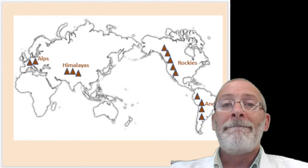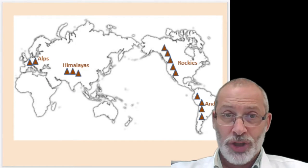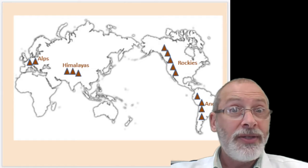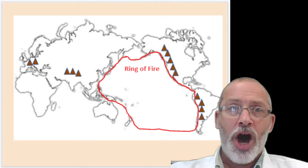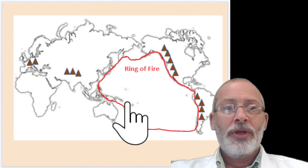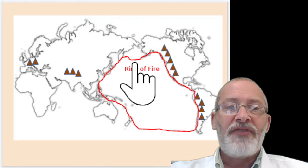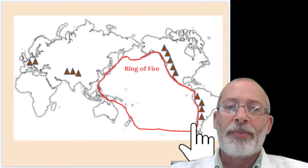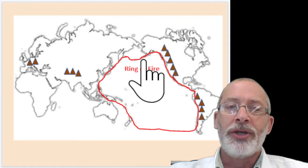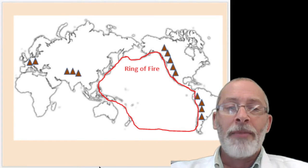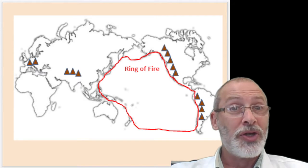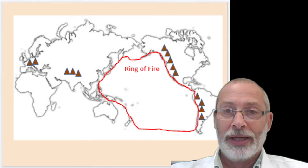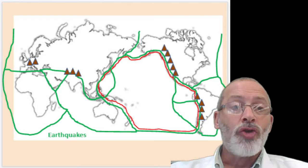Next, you're going to draw the Ring of Fire — that zone around the Pacific Ocean where most of the world's volcanoes exist because of plate boundaries.